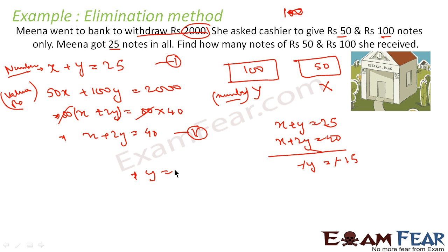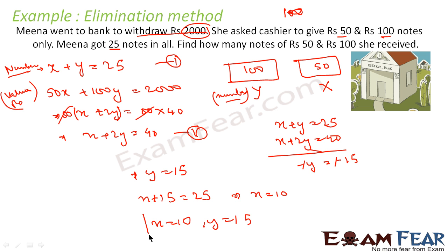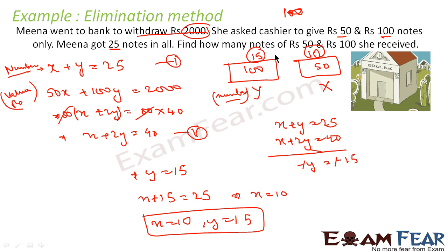Since y equals 15, I substitute back: x plus 15 equals 25, so x equals 10. Therefore x equals 10 and y equals 15. That means Meena received 10 notes of 500 rupees and 15 notes of 100 rupees. That is the answer — very simple.